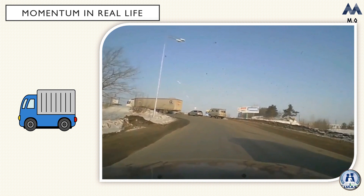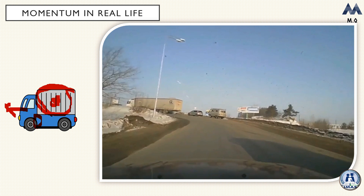In another example, when both the load and the truck were stopped, the momentum of each was zero. When the truck started moving — because the engine force moved the truck — the load on top did not receive a similar force, so it kept its momentum of zero. The truck moved forward while the load remained in place, because it didn't receive enough force to change its momentum.